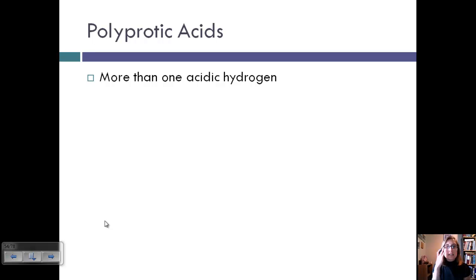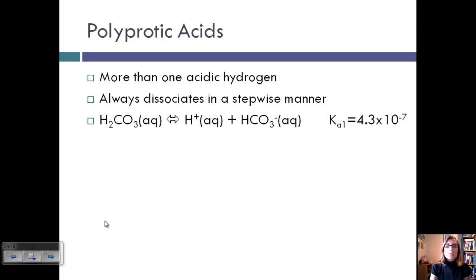So a polyprotic acid is an acid with more than one acidic hydrogen, and it always dissociates or breaks apart in a stepwise manner. So if we have H2CO3, you can see that it's polyprotic because of the two hydrogens.